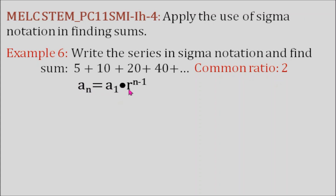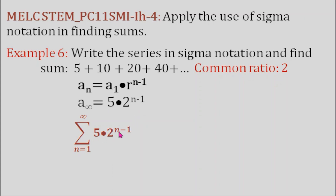Substituting a sub 1 with 5 and r with 2, we get a sub infinity equals 5 times 2 to the power of n minus 1. Why infinity? Because the three dots mean there are other terms all the way to infinity. In sigma notation, the rule is 5 times 2 to the power of n minus 1, where n is from 1 to infinity. Looking at the next terms, they become bigger and bigger. Because our series diverges, there will be no sum. This happens when our ratio is greater than 1.